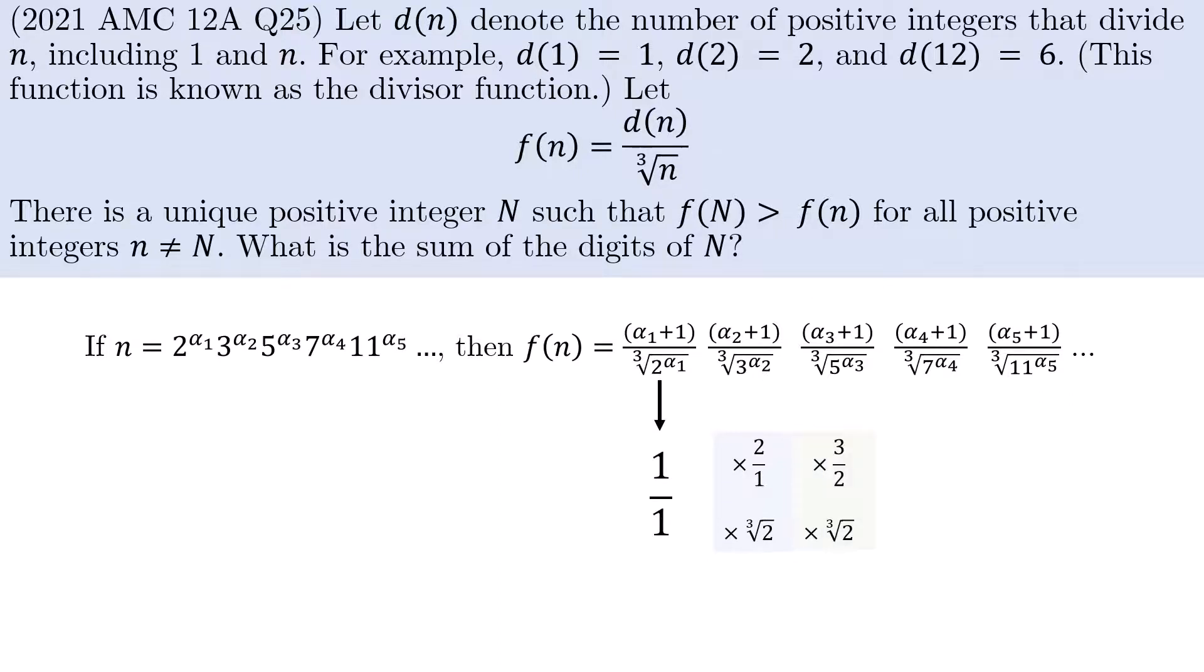This time, the numerator will change by a factor of 3 over 2 because the numerator changes from the value 2 to the value 3. Meanwhile, the denominator changes by a factor of cube root of 2. Again, this is an overall increase. You can see this because 27 over 8 is bigger than 2. Shall we increase alpha further?